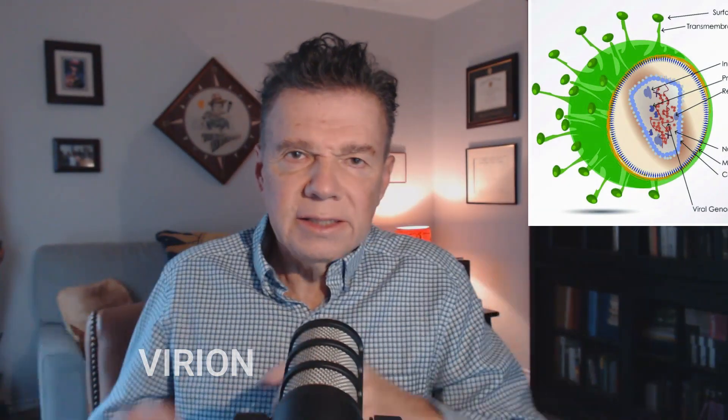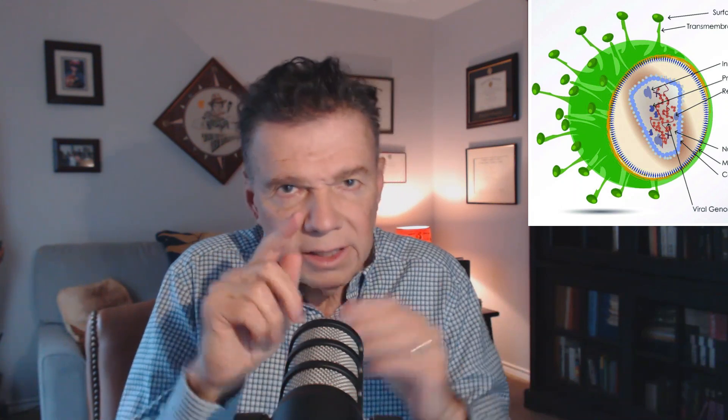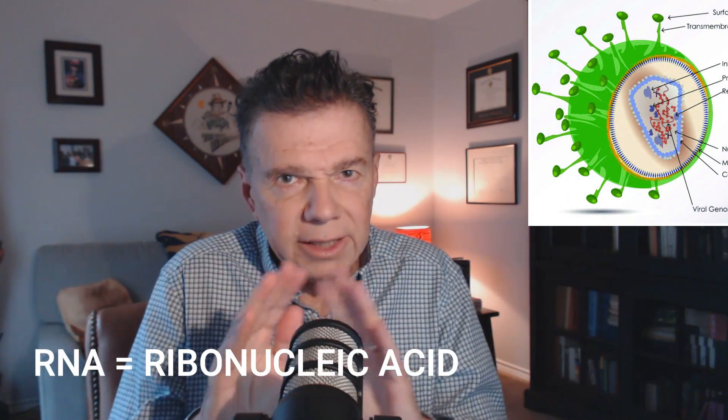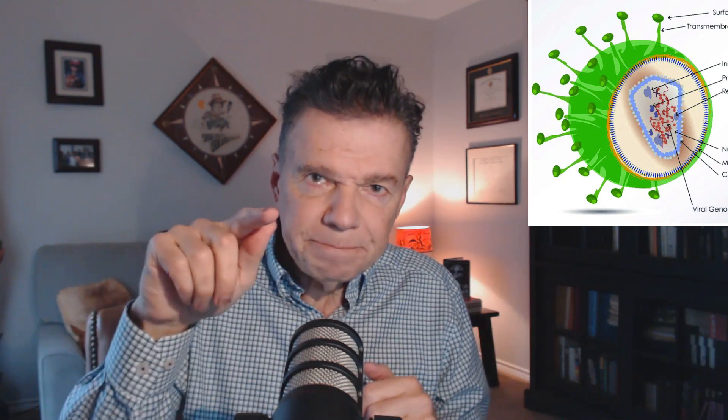Viruses are not living — they're not living organisms. They are really particles. We call the entire particle of a virus a virion, and it consists of genetic material in the middle, which can be DNA or RNA — ribonucleic acid. The coronavirus has RNA in the middle of it. It's surrounded by a coat of protein and then a coat of fat. Just a little genetic material, a dollop, then a protein coat, and then a fatty, greasy coat.